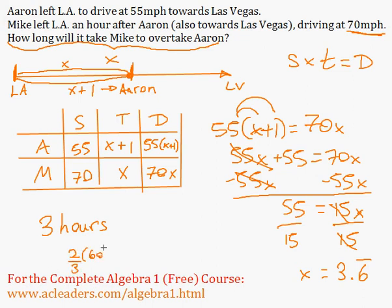And an hour has 60 minutes. 2 over 3 times 60 is just 40 minutes. So 3 hours and 40 minutes is how long it took Mike to reach Aaron on the highway.